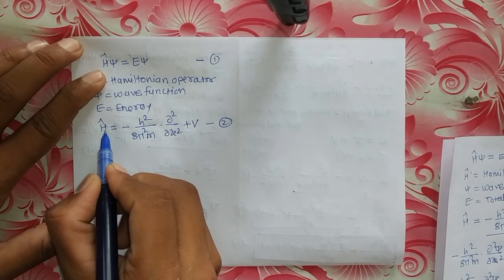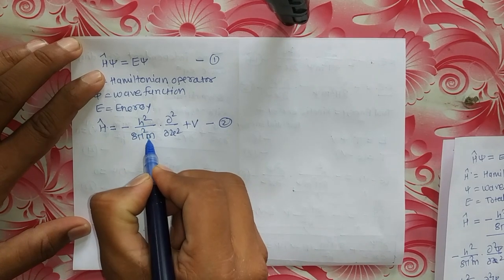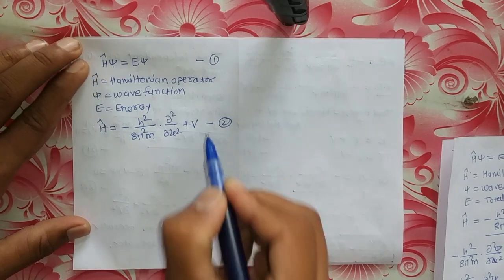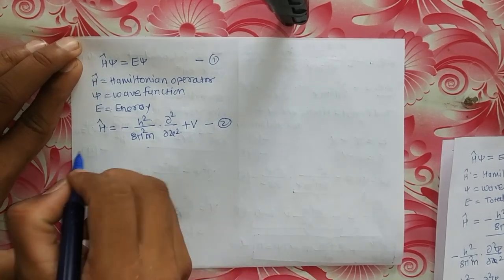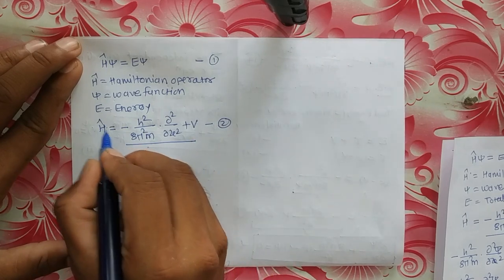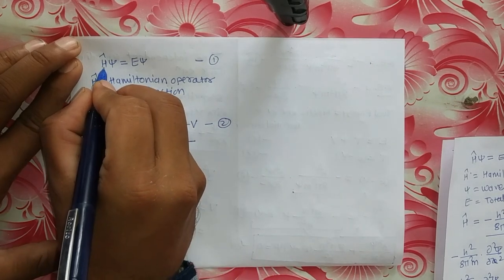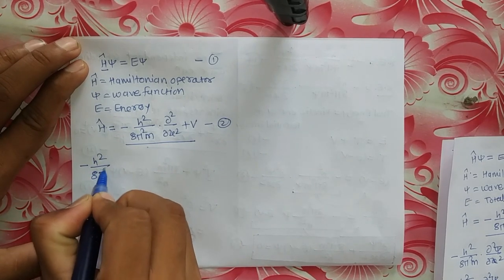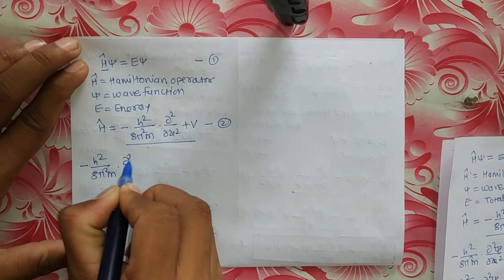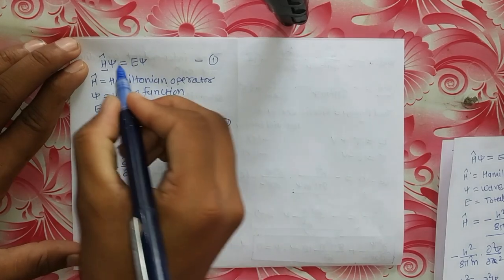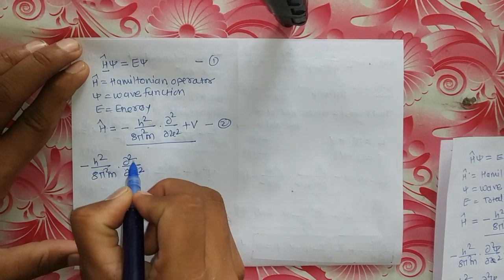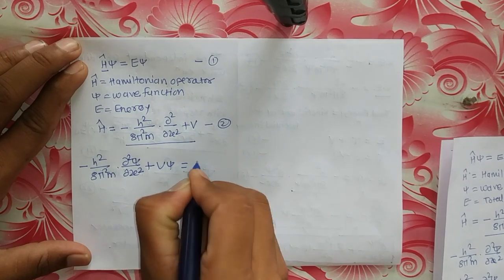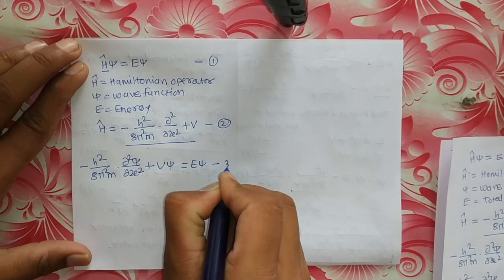In equation number 2, H-cap is the Hamiltonian operator. H is the Planck constant, M is the mass of the electron, x is the displacement of electron along the x-axis, and V is the potential energy. We are going to put this value of H-cap into equation 1. Then equation 1 becomes: −h²/(8π²M) · ∂²ψ/∂x² + Vψ = Eψ. This is equation number 3.